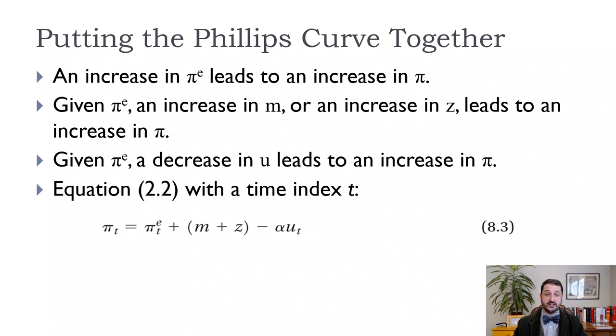So given our expected inflation, now we could say maybe expected inflation is around two percent. Then an increase in the markup or an increase in Z, our catch all variable, leads to an increase inflation. And given all of that, a decrease in the unemployment rate leads to an increase in inflation. So it's negative there. Negative alpha times u_t. So when the unemployment rate goes down, inflation goes up. When the unemployment rate goes up, inflation goes down.